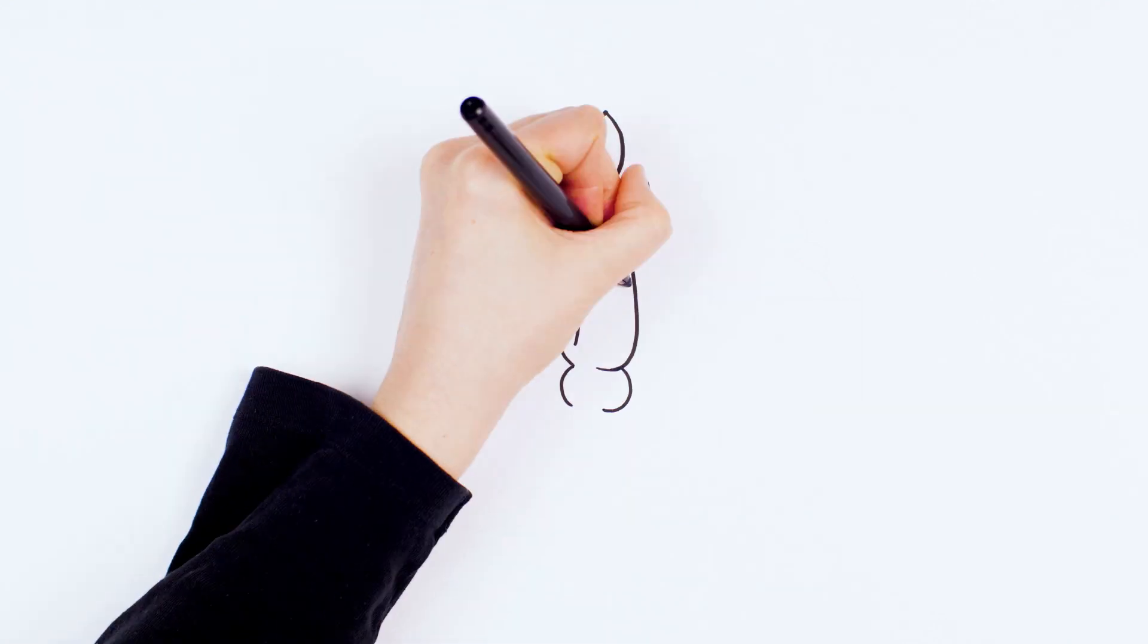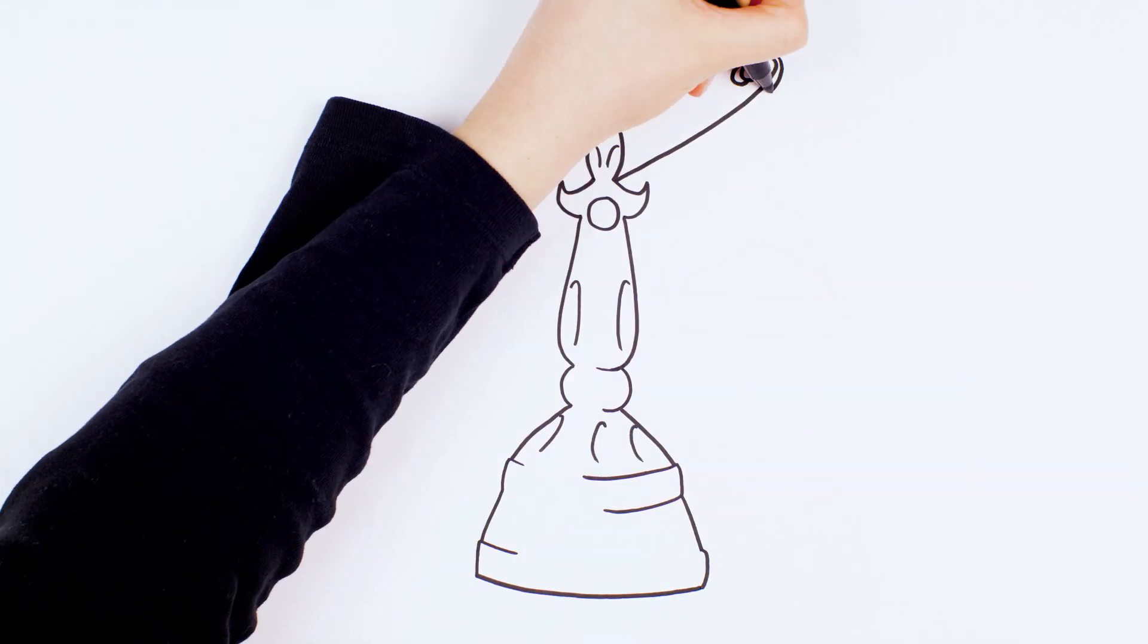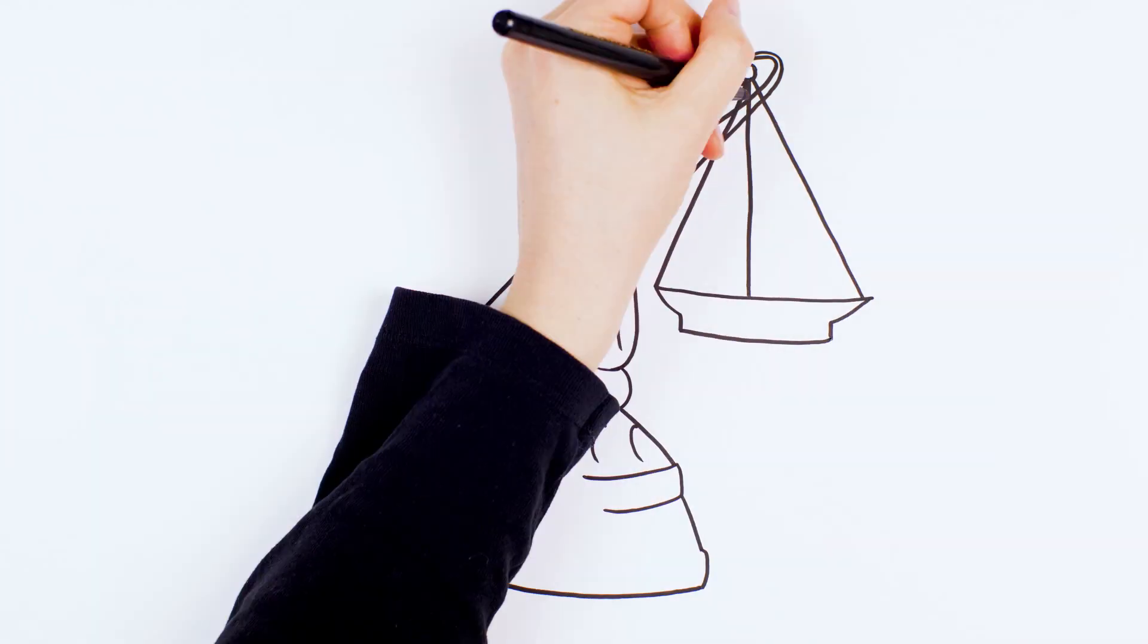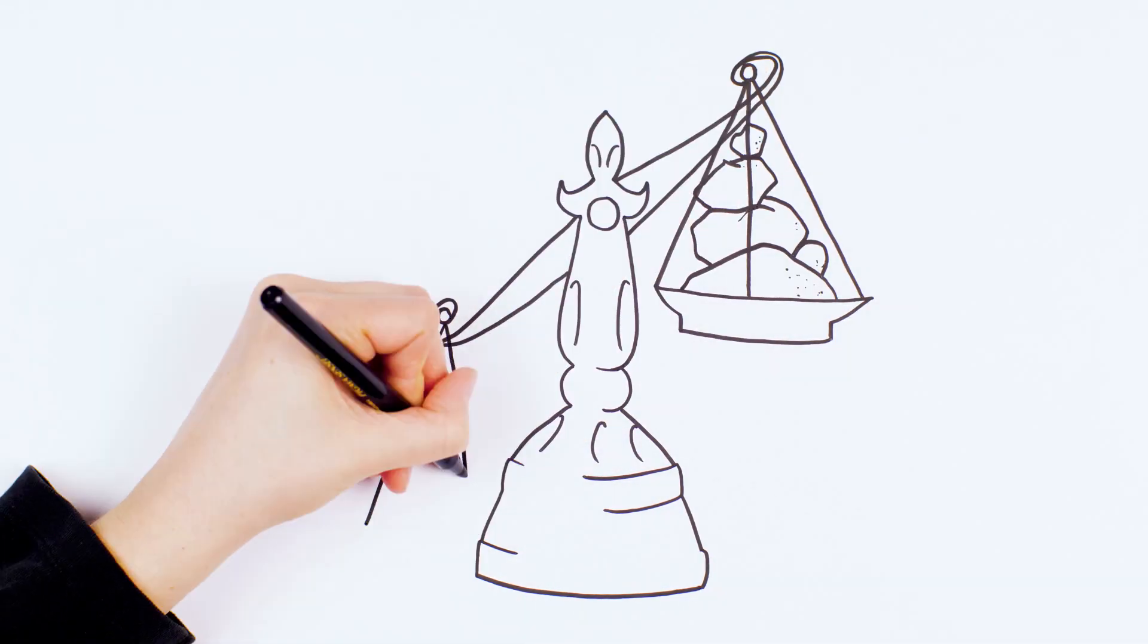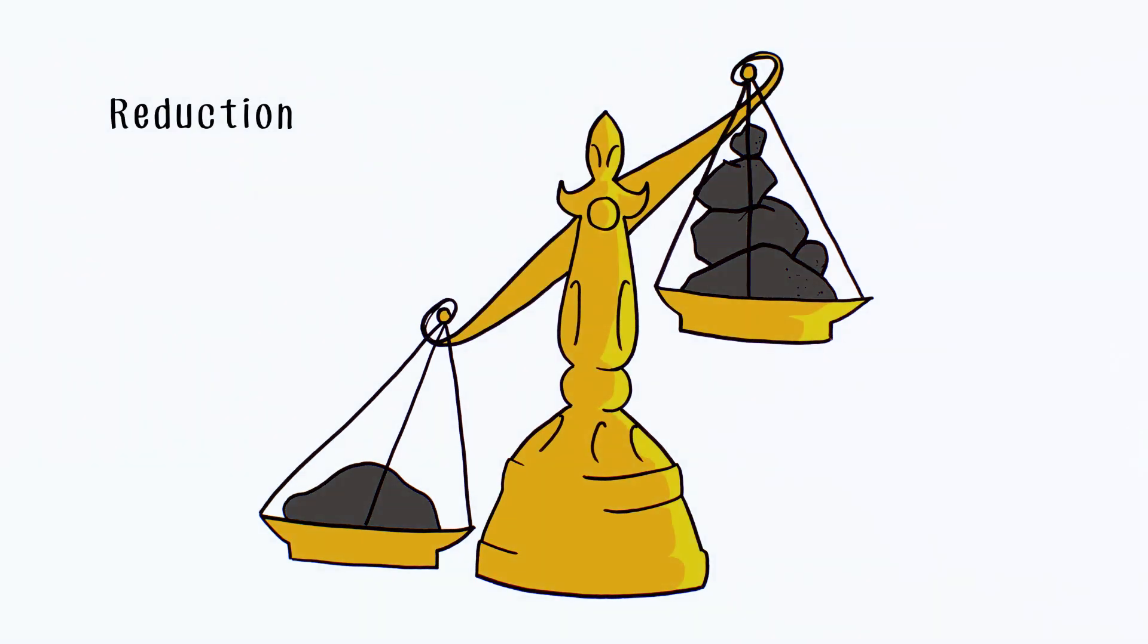Antimicrobials are important tools for fighting infections, but we shouldn't rely on them to be the solution. Reduction, the second R, is all about being proactive and minimizing the need for antimicrobials. An ounce of prevention is worth a pound of cure.